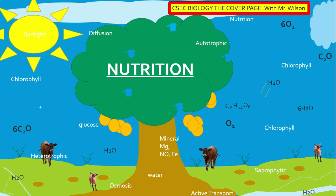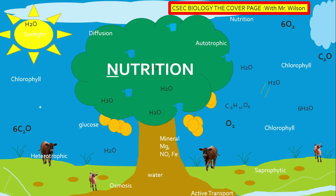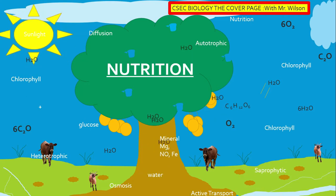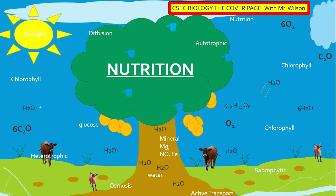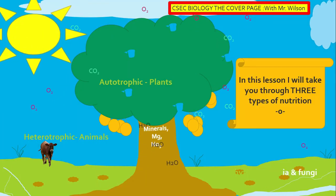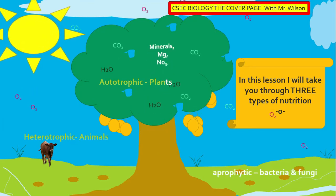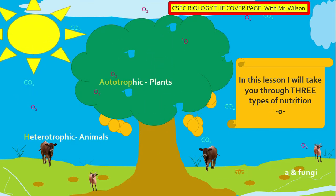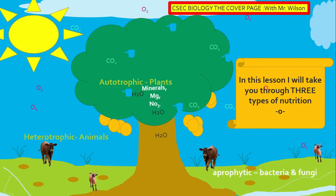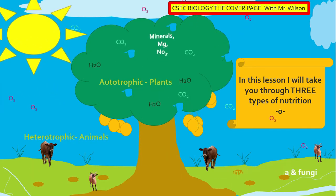Nutrition is a characteristic of all living things. Hence, they must obtain or make food to stay alive. But where does all this food come from and how is it made? Stay with me as we dive into this topic. In this lesson, I will take you through three types of nutrition: heterotrophic nutrition, autotrophic nutrition, and of course saprophytic nutrition.